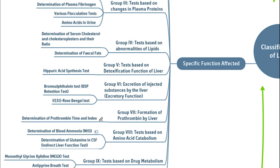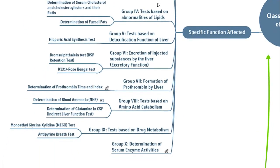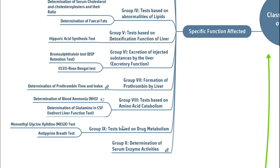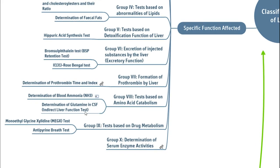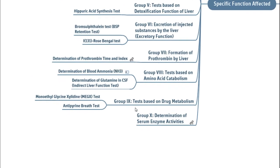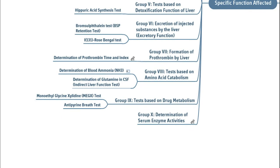Group 8 — tests based on amino acid metabolism — determination of blood ammonia and determination of glutamine in CSF, which gives an idea about abnormalities in protein metabolism due to liver failure. Group 9 — tests based on drug metabolism — monoethyl glycine xylidide (MEGX) test and antipyrine breath test. Group 10 — determination of serum enzyme activities — AST, ALT, ALP, GGT, and 5'-nucleotidase.